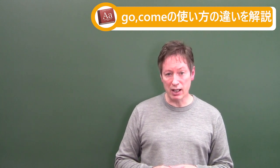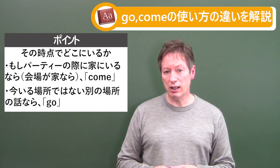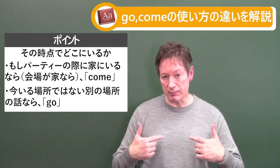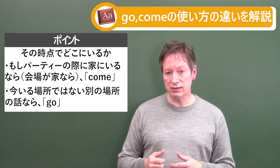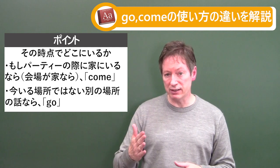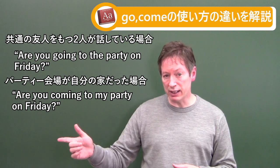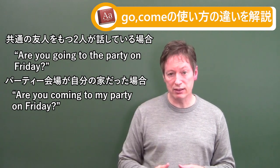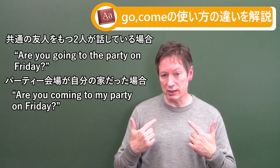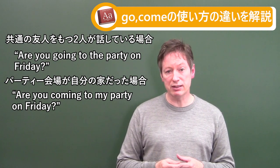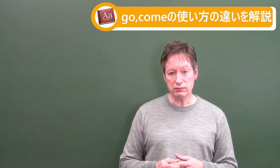The last thing I want to do is complicate and confuse you. So here's the idea: if the base is where you are — like you're home for that party — you'll say 'come.' If the base is not where you are and you're not connected to it, you use 'go.' So: 'Are you going to the party on Friday?' — two mutual friends ask. 'Are you coming to my party on Friday?' — I ask, because the party is at my place.